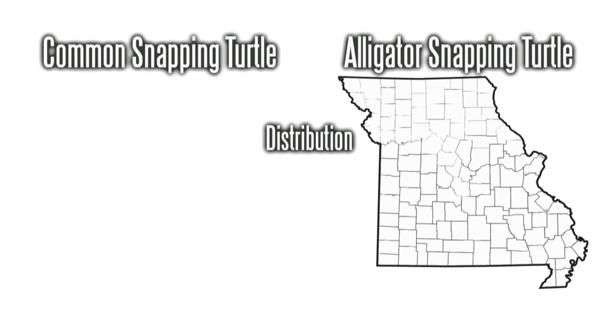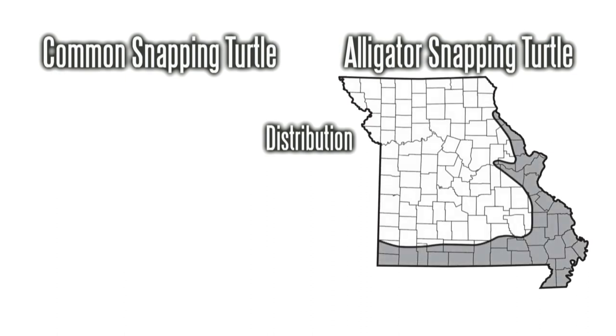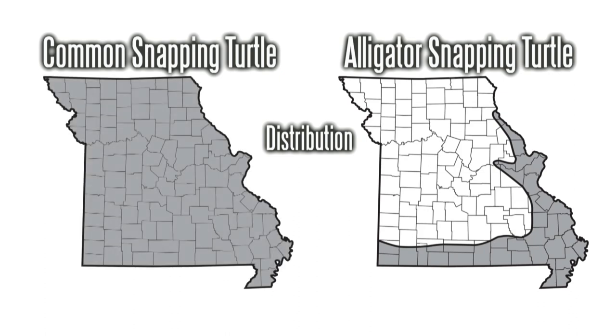Finally, alligator snappers live in a select portion of Missouri. They prefer the extreme southern and eastern portions of our state. Common snappers make their homes statewide.